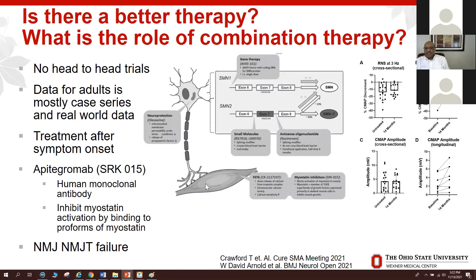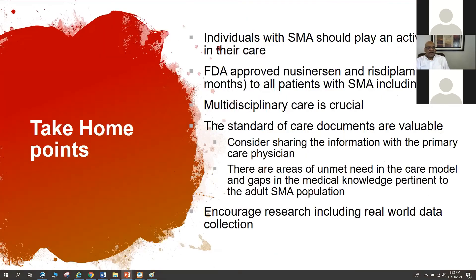Another research area examines how the nerve and muscle communicate at the neuromuscular junction. Data has shown that neuromuscular junction transmission is defective in SMA. Observations in our cohort indicate that this defect is not necessarily corrected with nusinersen, providing another area for potential added therapy.